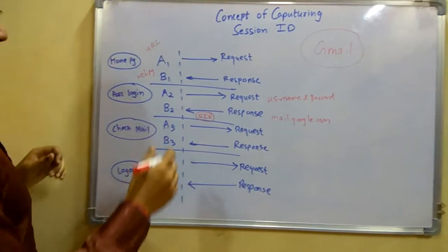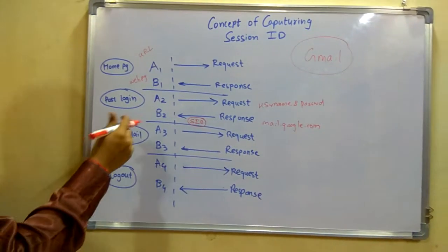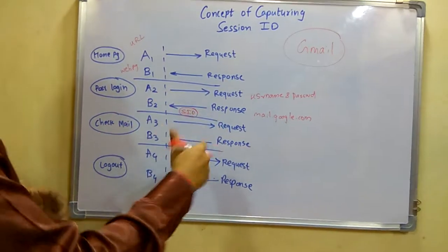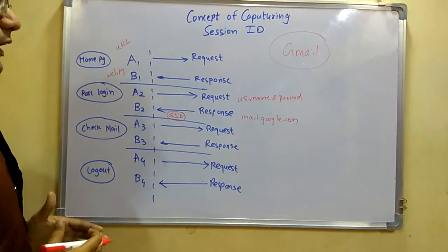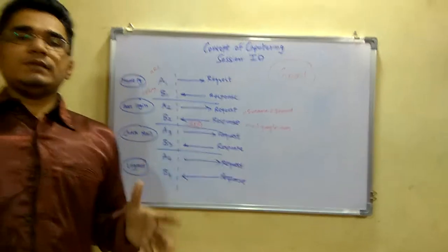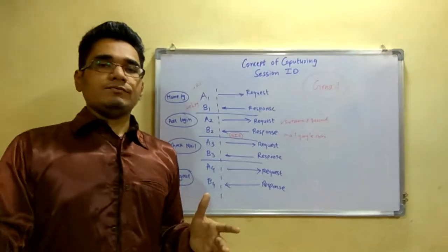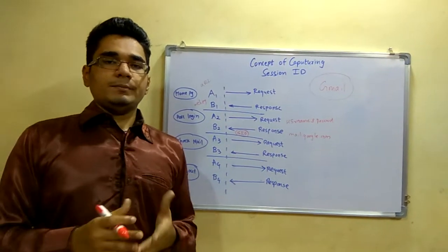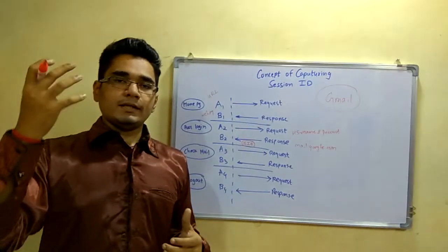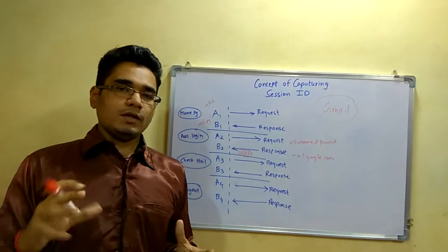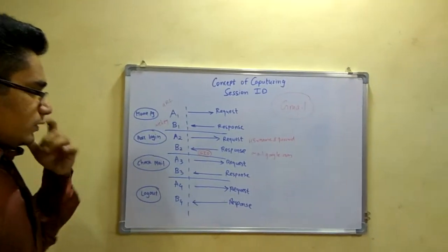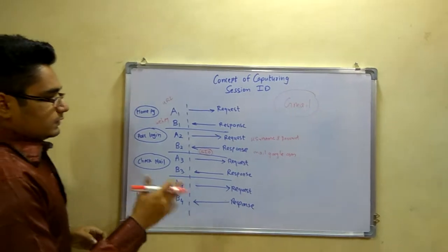After this you have to check the mail. For checking the mail you have to give a particular request. Suppose you have many emails in your tabs like forums or social media — you have to click one particular tab and get one particular email message, so you will be requesting to the server.